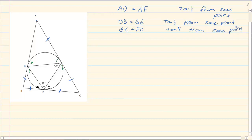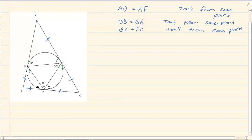Now if you have a tangent and a chord, we know that angle will equal an angle in the opposite segment. We can clearly see that X is equal to 50 degrees, and the reason is the tan-chord theorem.